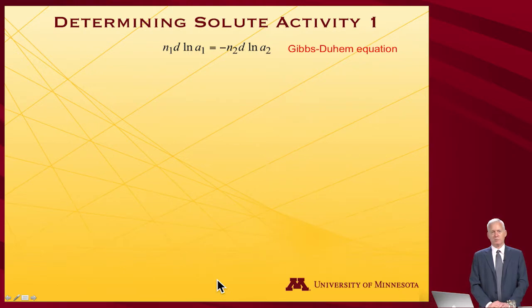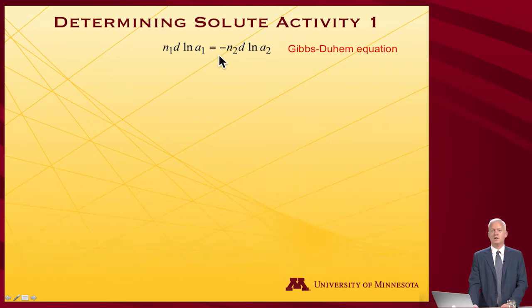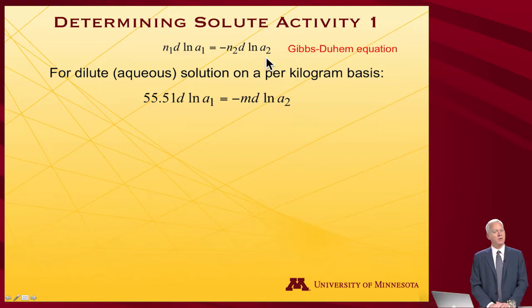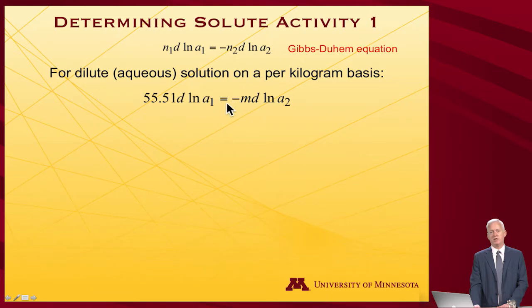Let's recall the Gibbs-Duhem equation: the number of moles of substance one (our solvent) times the change in the activity of the solvent equals minus the number of moles of solute times the change in the activity of the solute. For a dilute aqueous solution, on a per kilogram basis, I know how many moles of water I have — 55.51 — and I'm monitoring how its activity is changing. That equals minus the molality (moles in that kilogram) times the change in the solute activity.